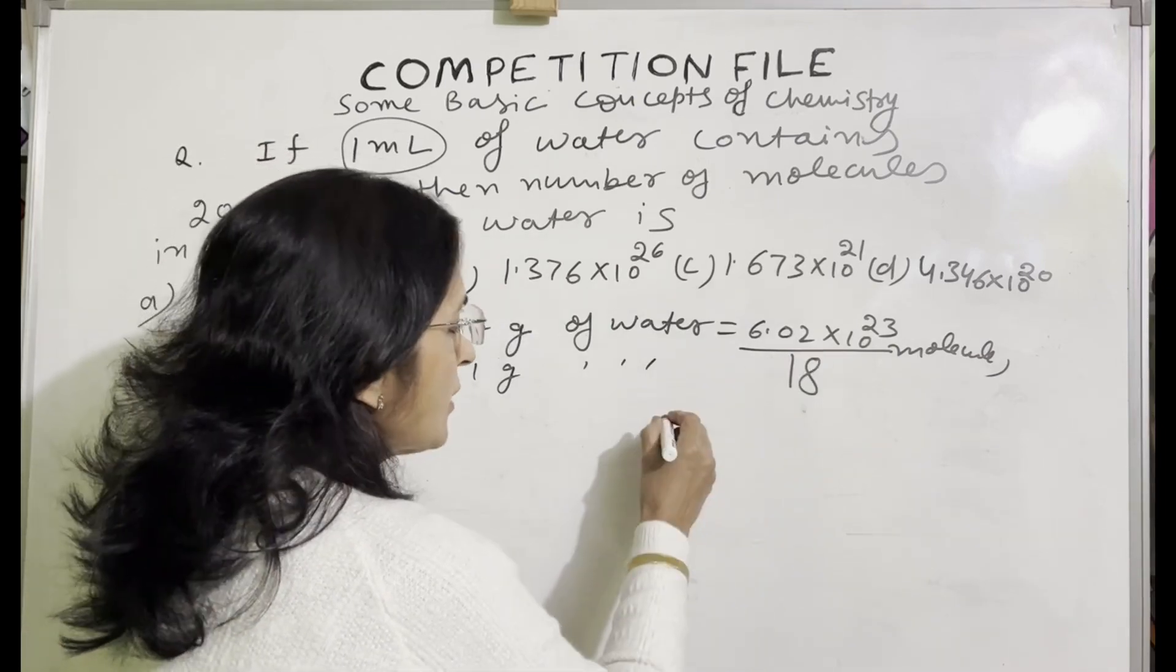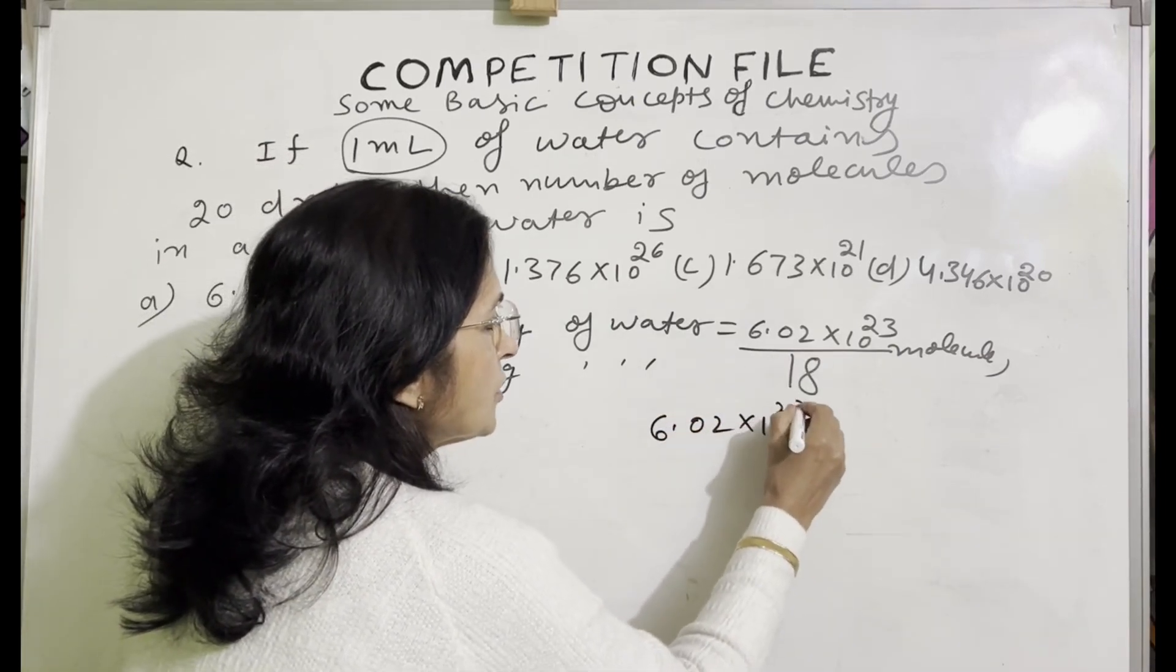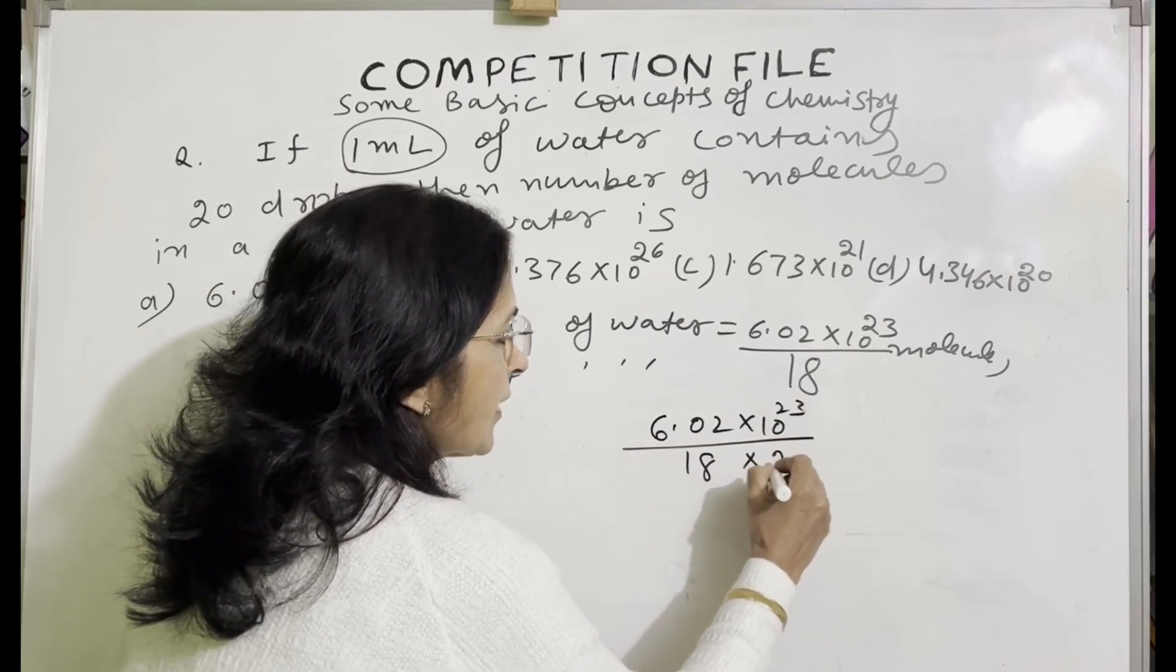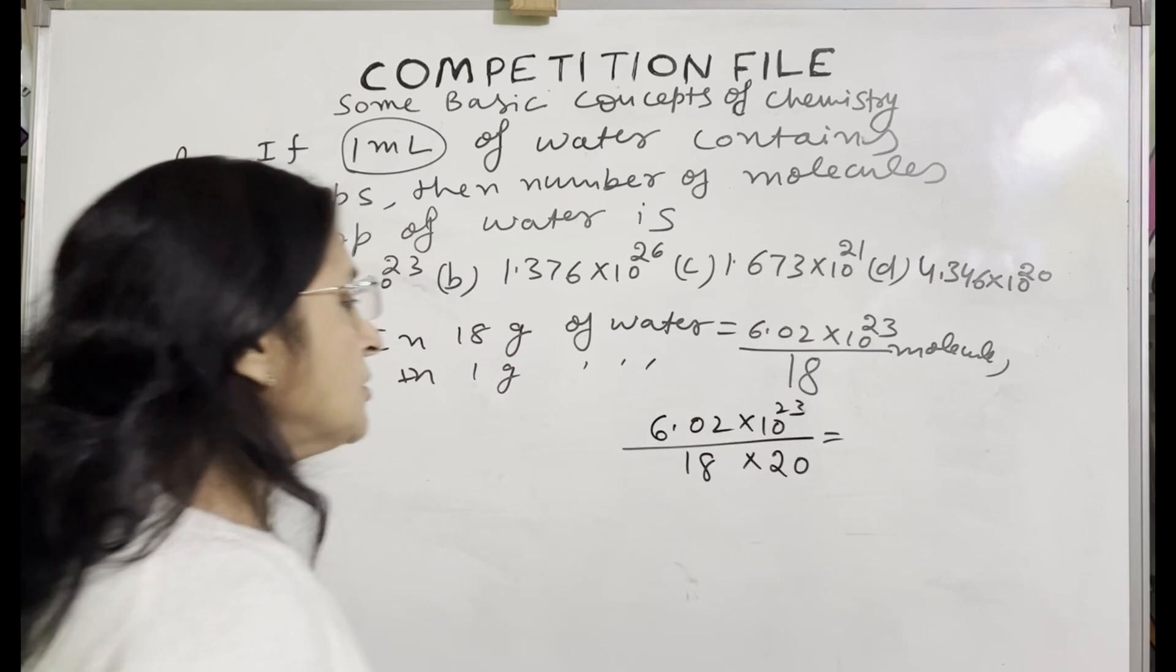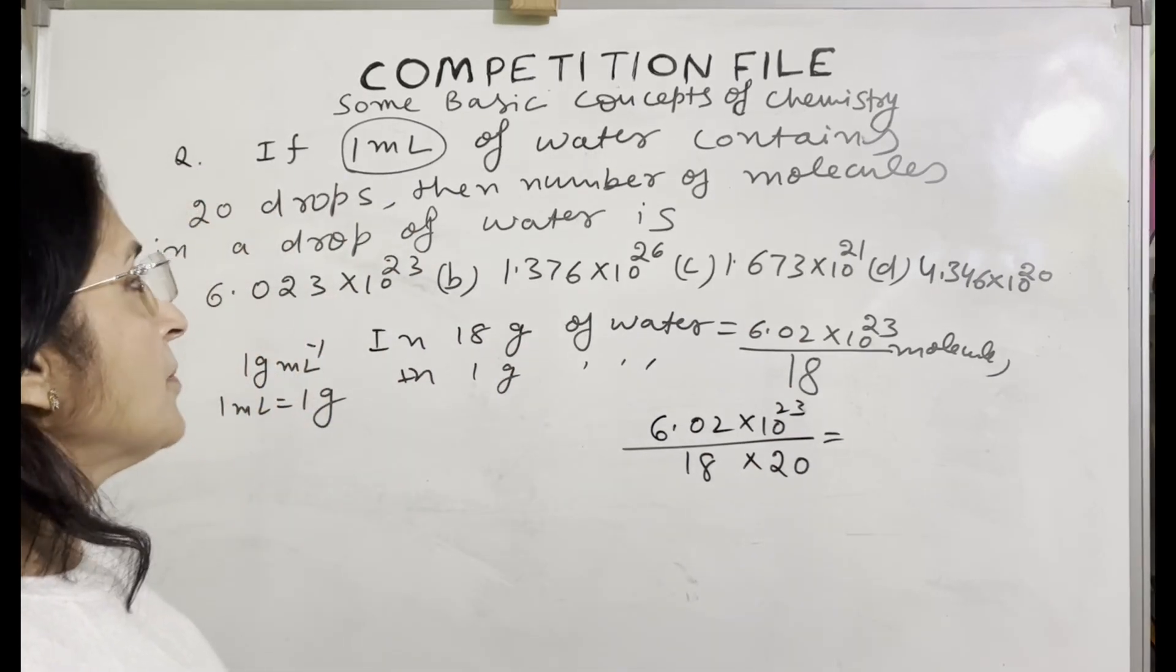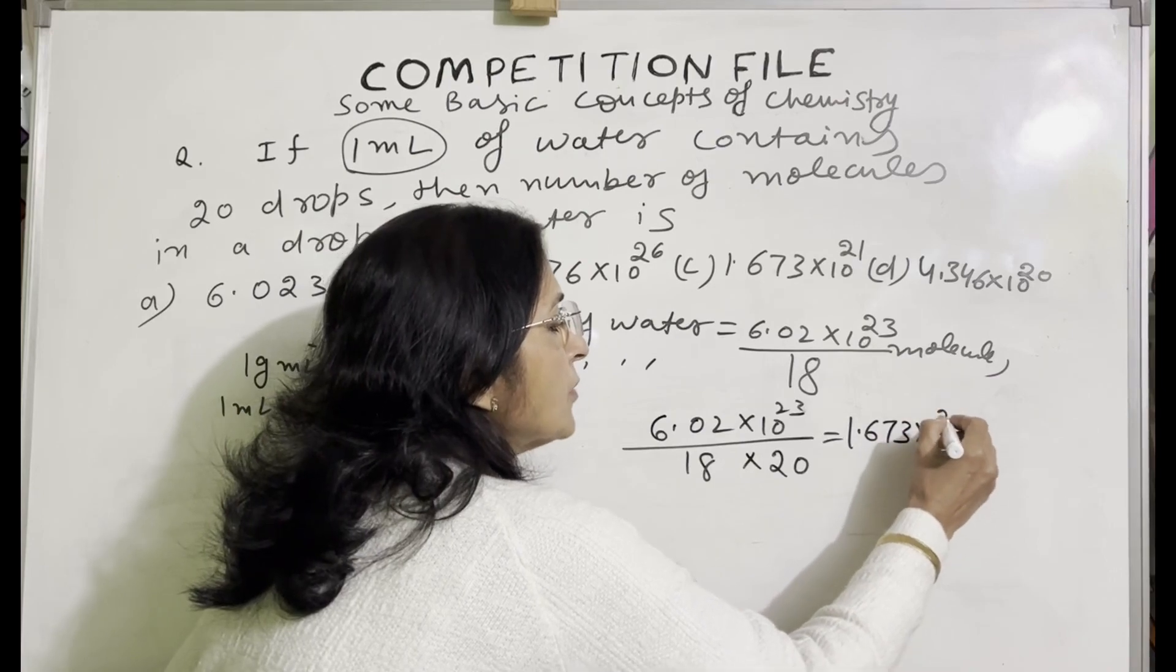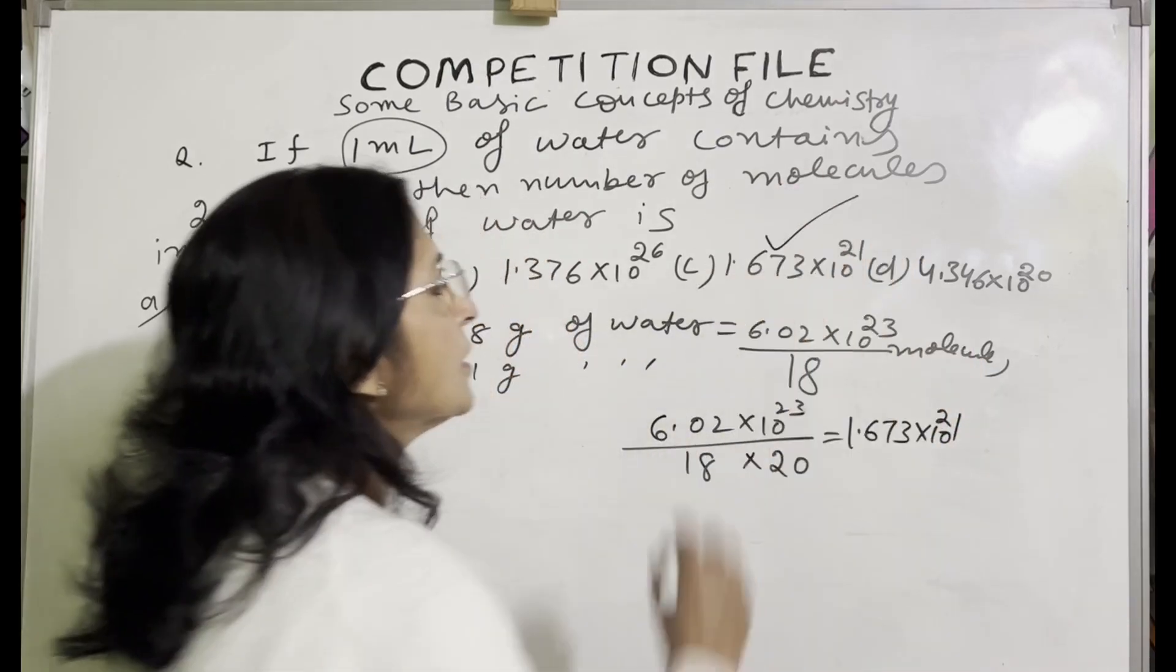You will divide it by 20. So 6.02 into 10 raise to the power 23, divide this by 20 and by 18. Now you solve this. The answer comes out to 1.673 into 10 raise to the power 21. So this will be the answer.